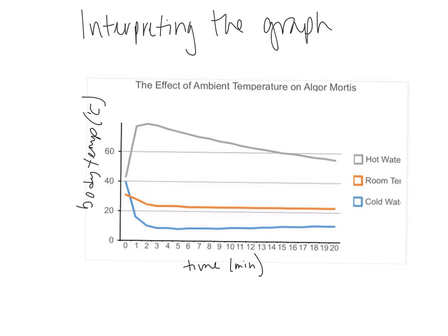When looking at the graph, we have body temperature on the y-axis and time on the x-axis. There are three different ambient temperature environments: hot, room temperature, and cold. In every case, the body temperature will eventually reach the ambient temperature and then stay fairly constant — especially in a room temperature environment, where heating and air conditioning keep the temperature stable.